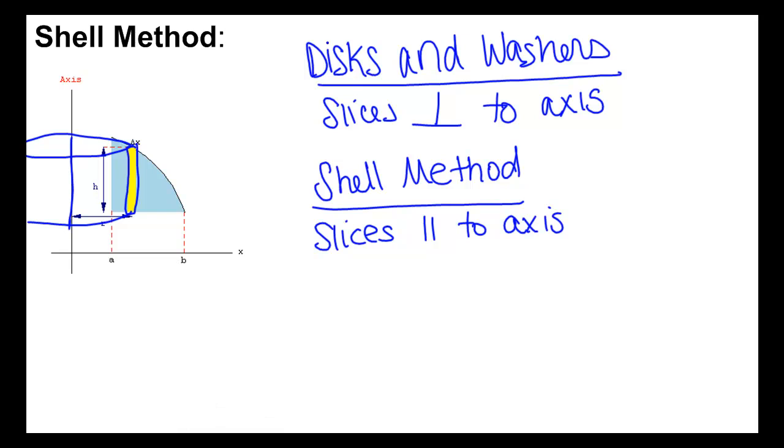And so what we would need to do is find essentially the volume of each of those little soup can wrappers and add them all up. Now they're still very, very thin.